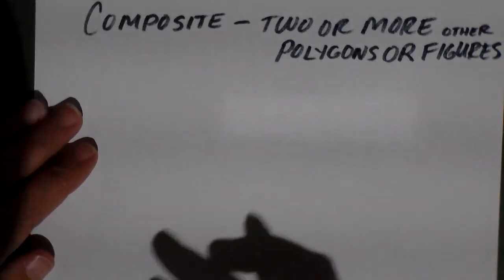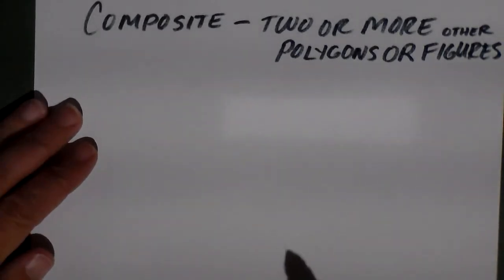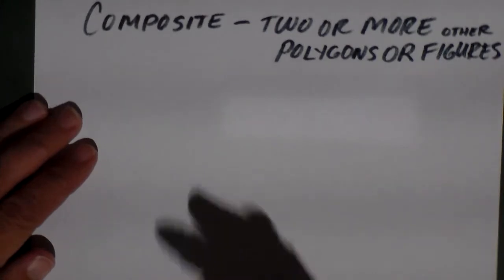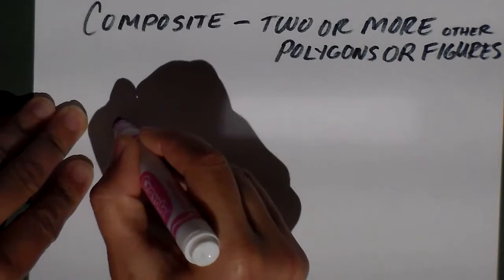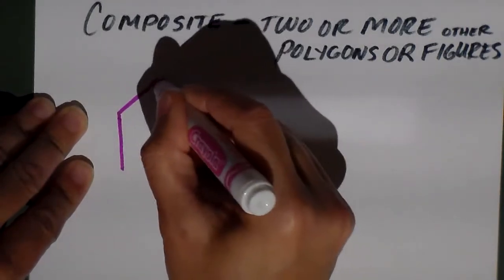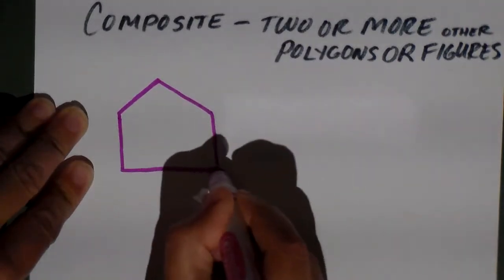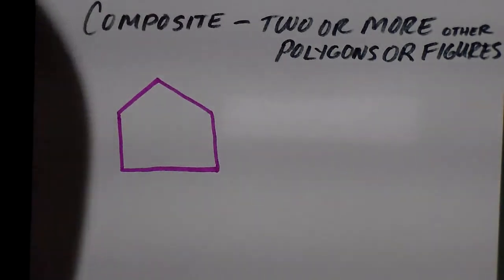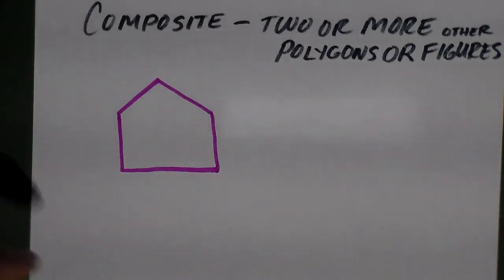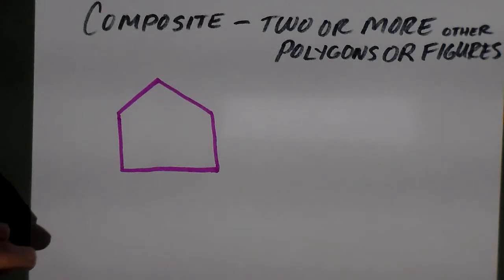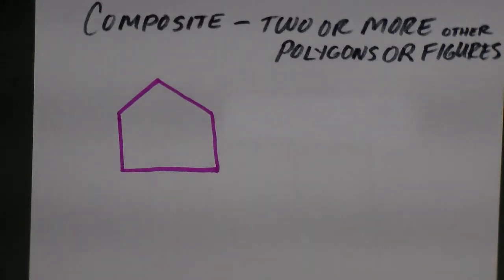We have formulas for rectangle, square, triangle, and parallelogram. Now, what is a composite figure? If I give you something that looks like a home plate for softball — this would be a warped home plate — this is a composite figure. There is no formula for the area of a pentagon that looks like this. It's not a regular pentagon, and there is no pentagon formula because all pentagons are different.